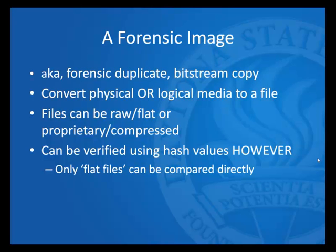The earliest and most common form of forensic duplicate was to create a raw, or sometimes known as flat, file. What that basically meant was that you took each byte off the drive, one byte at a time, and stored it one after another on the storage media. If you do that, the file will be exactly the same size as the original media. So if you have a 100 megabyte hard drive, you will have a 100 megabyte flat or raw forensic image.